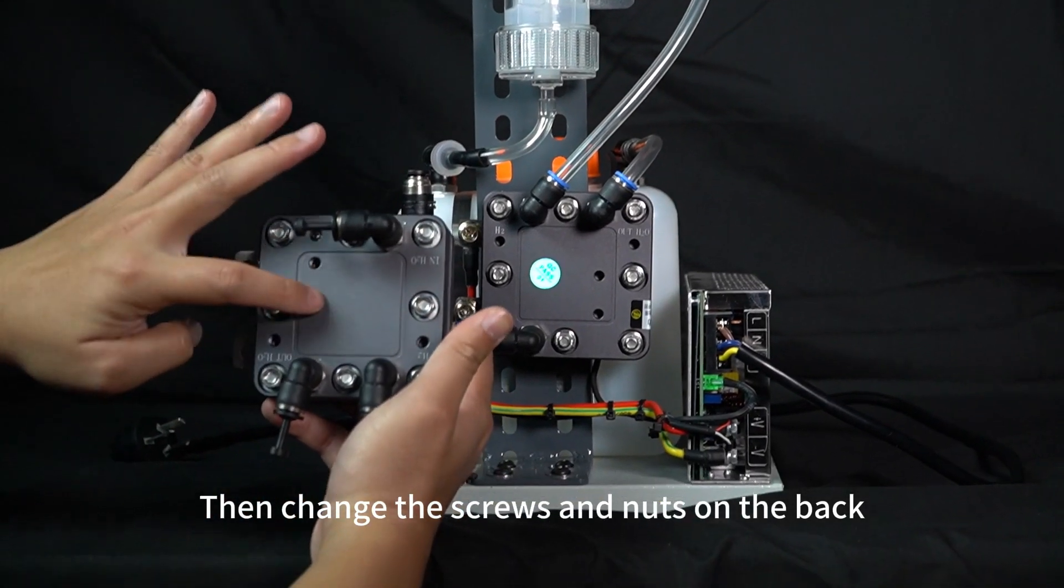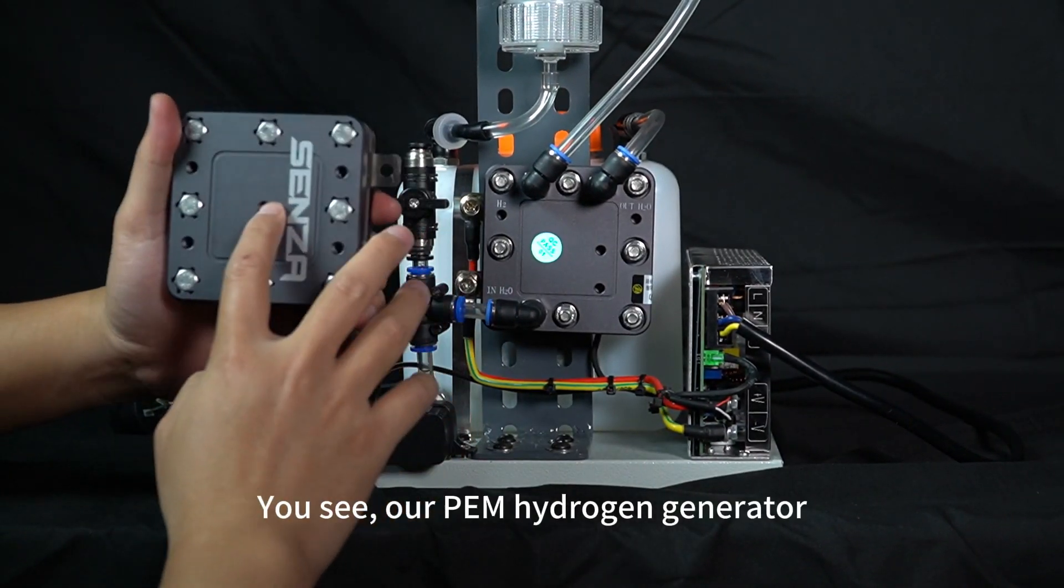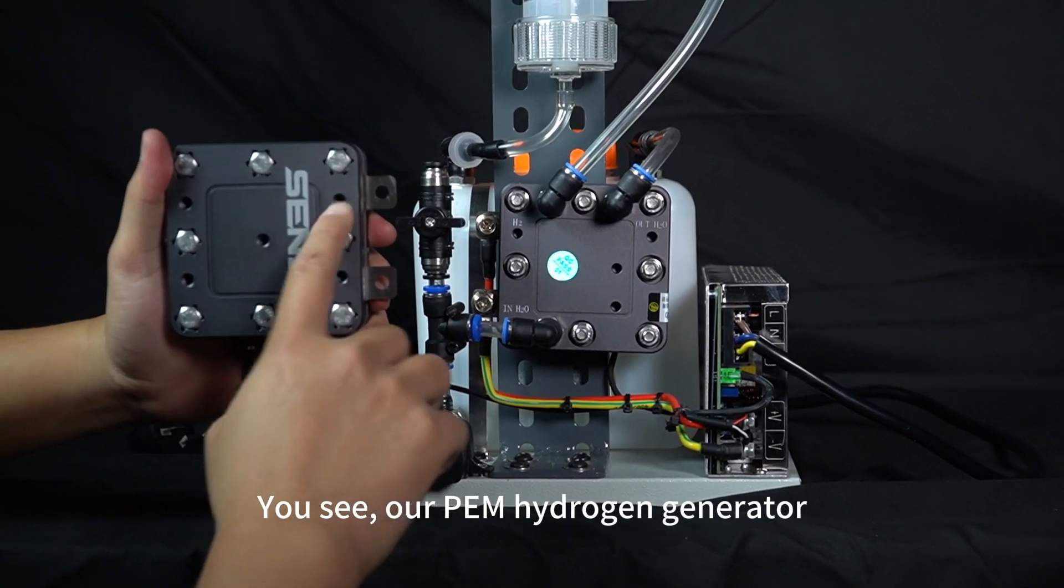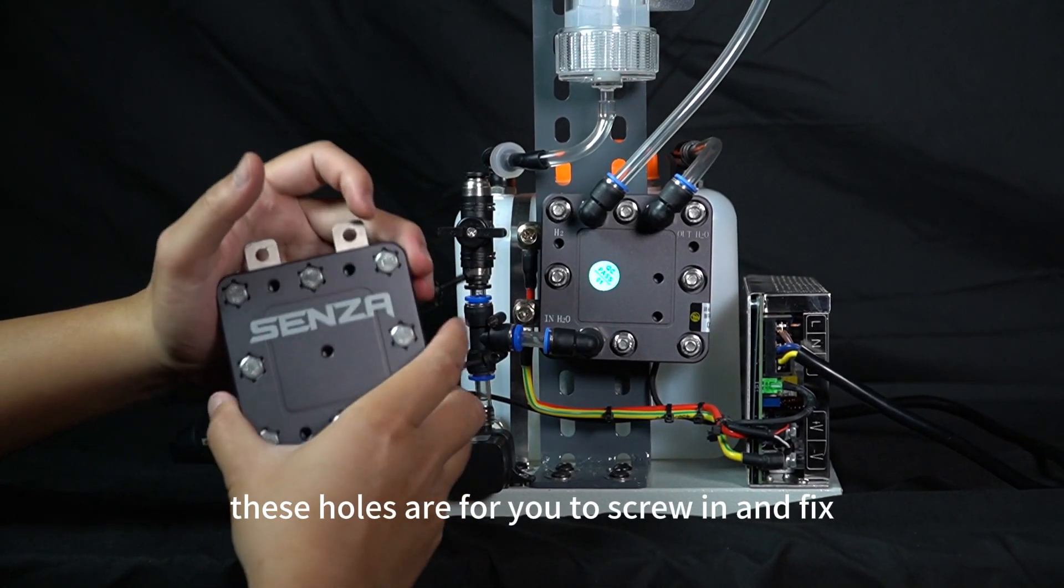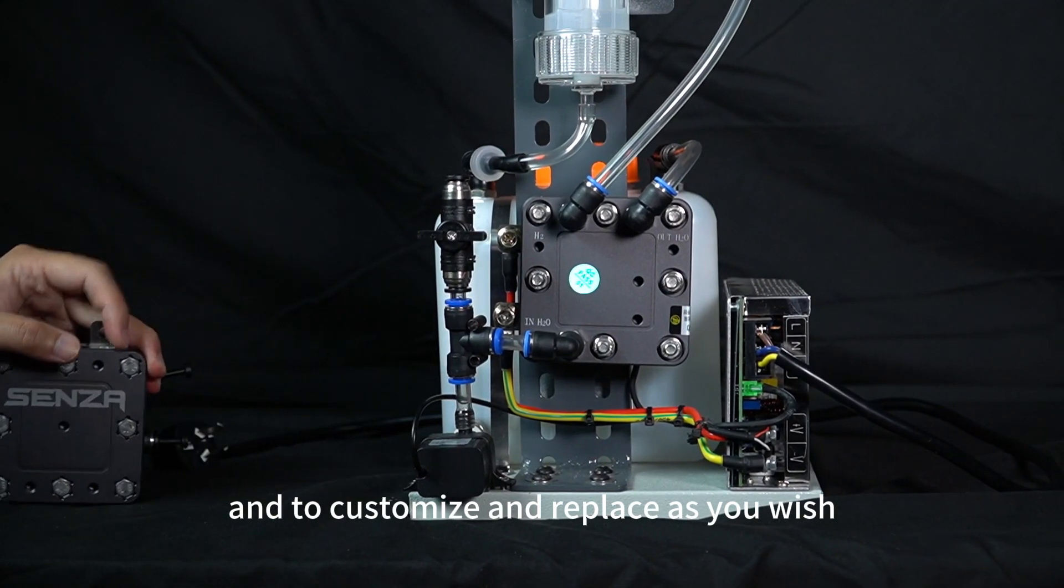Then change the screws and nuts on the back and fix it here. You see, our PEM hydrogen generator, these holes are for you to screw in and fix, and to customize and replace as you wish.